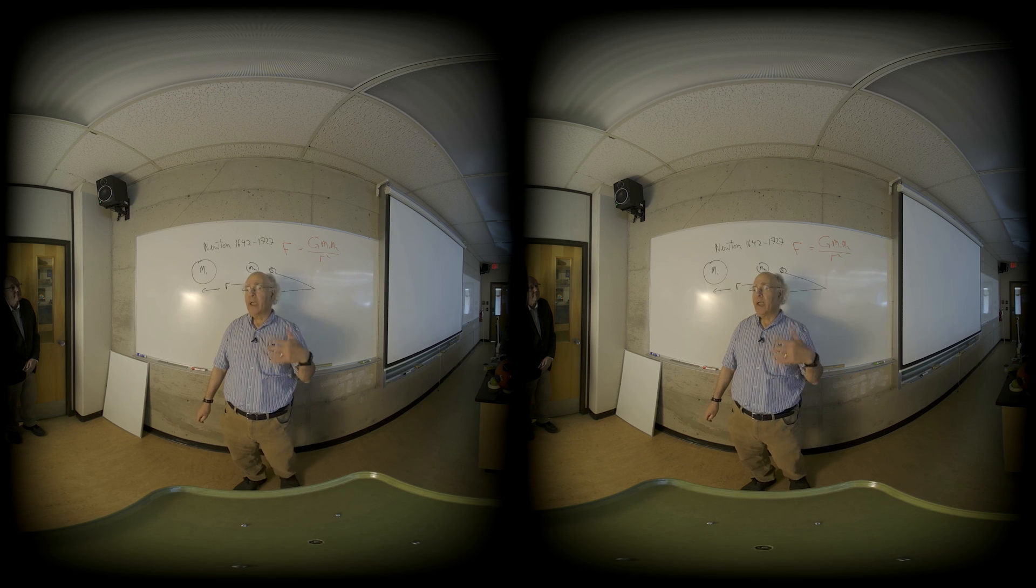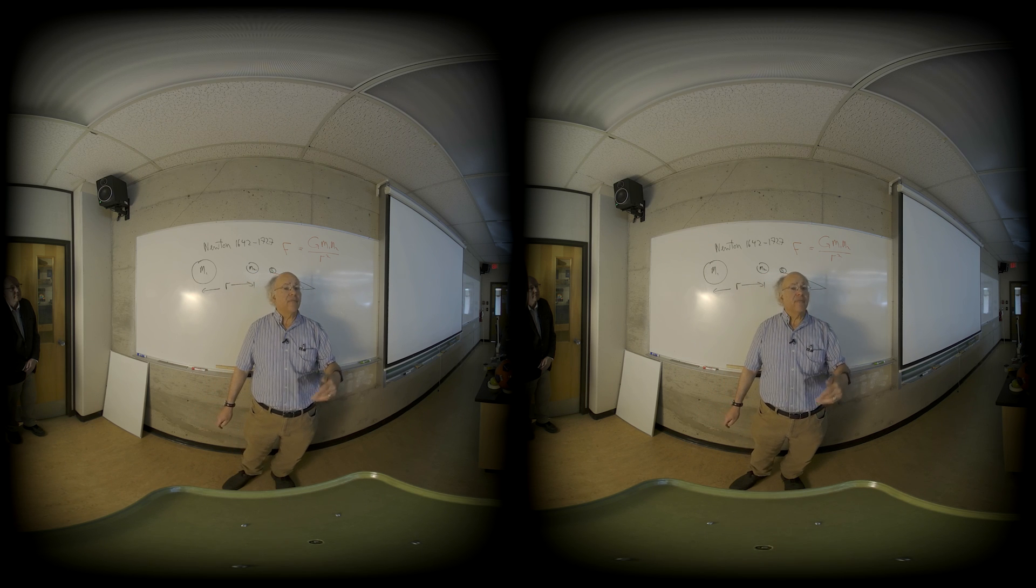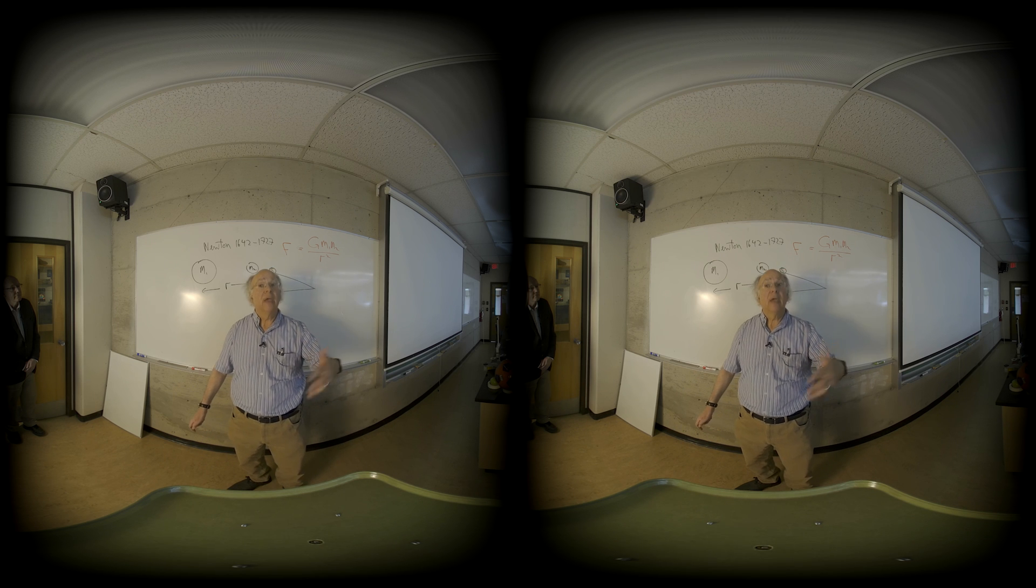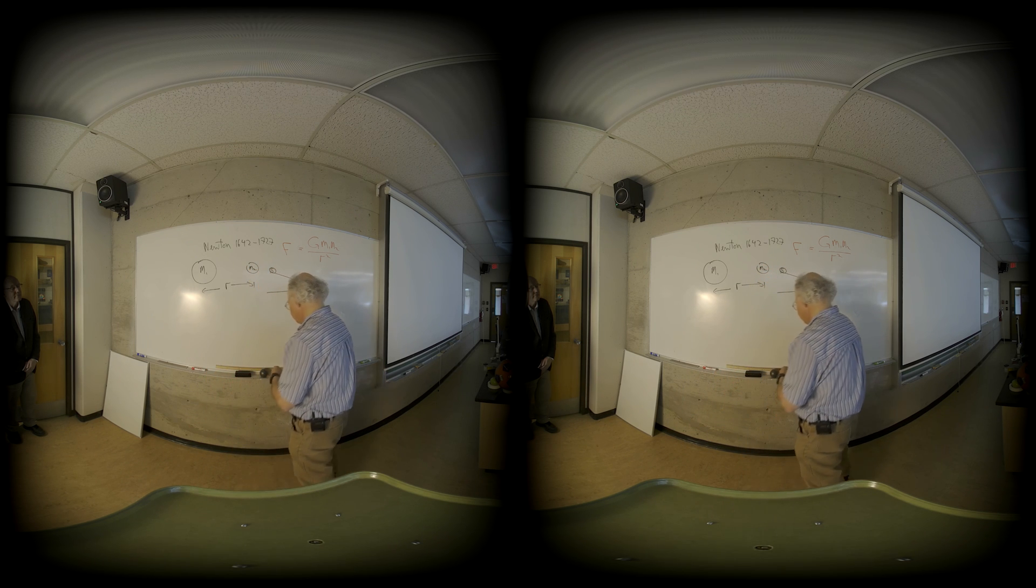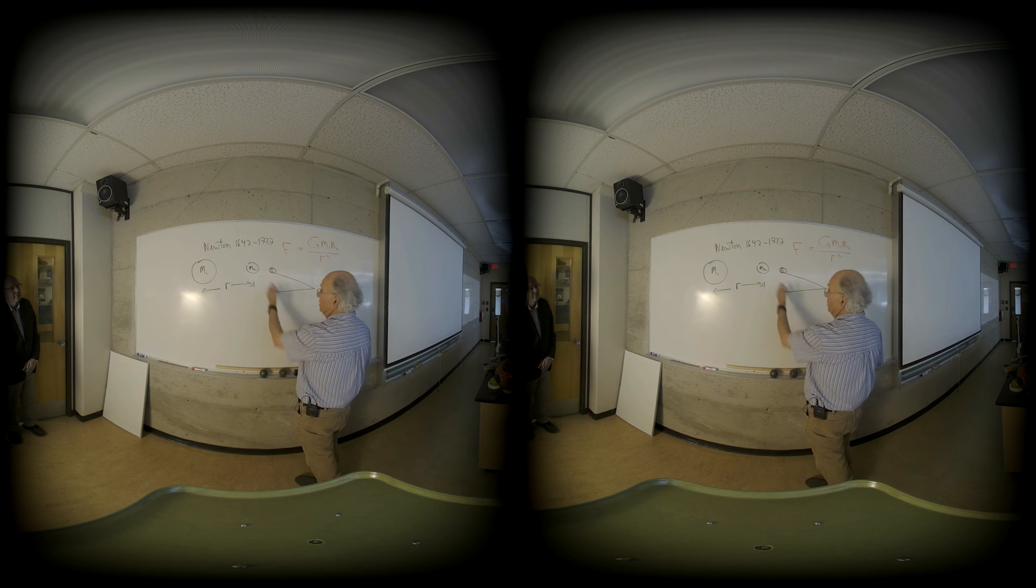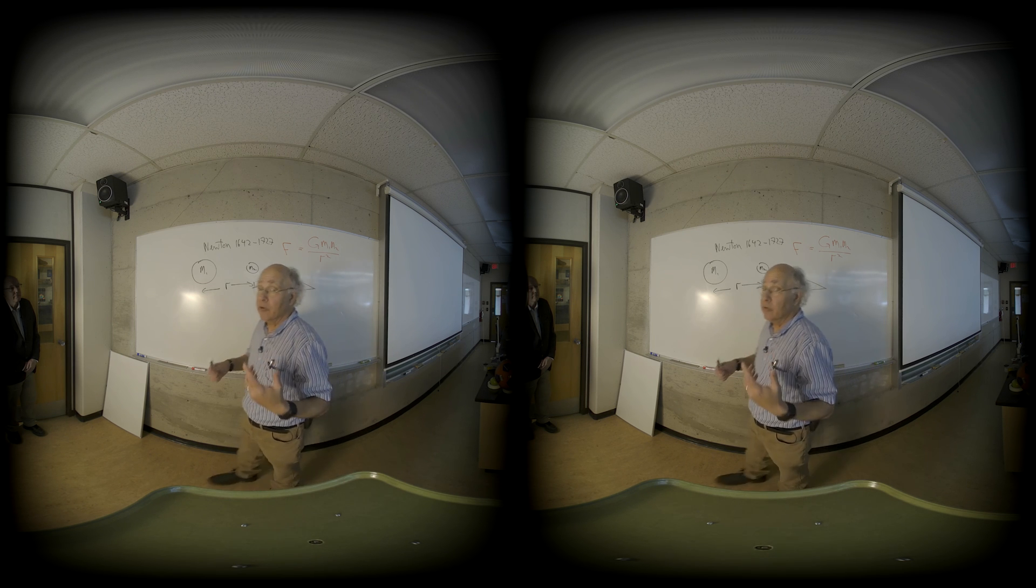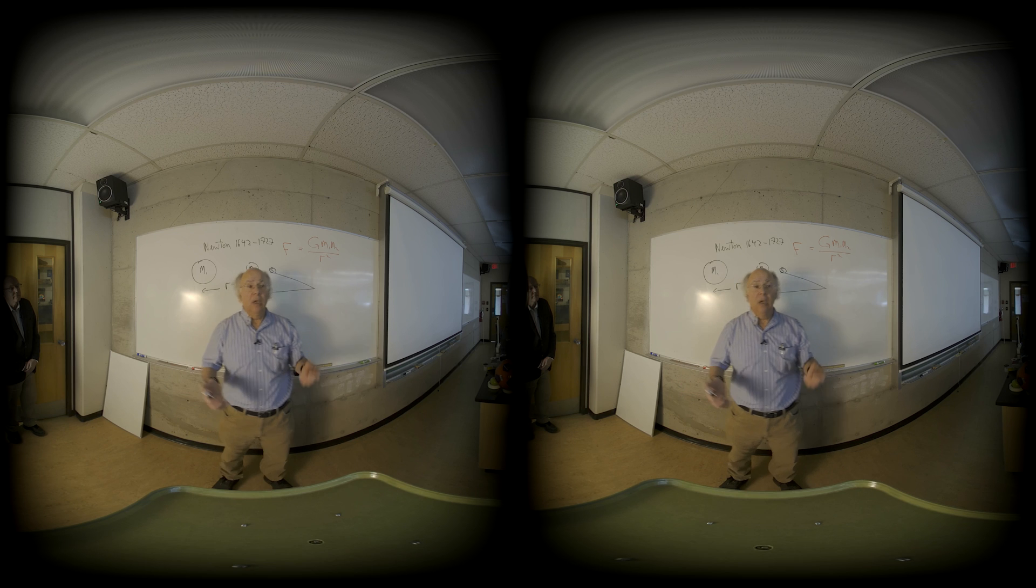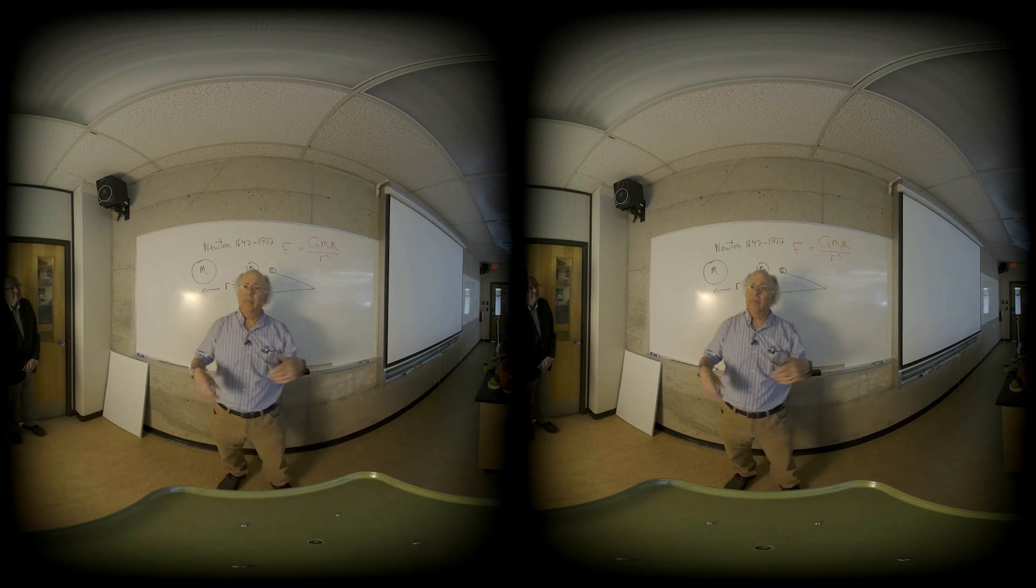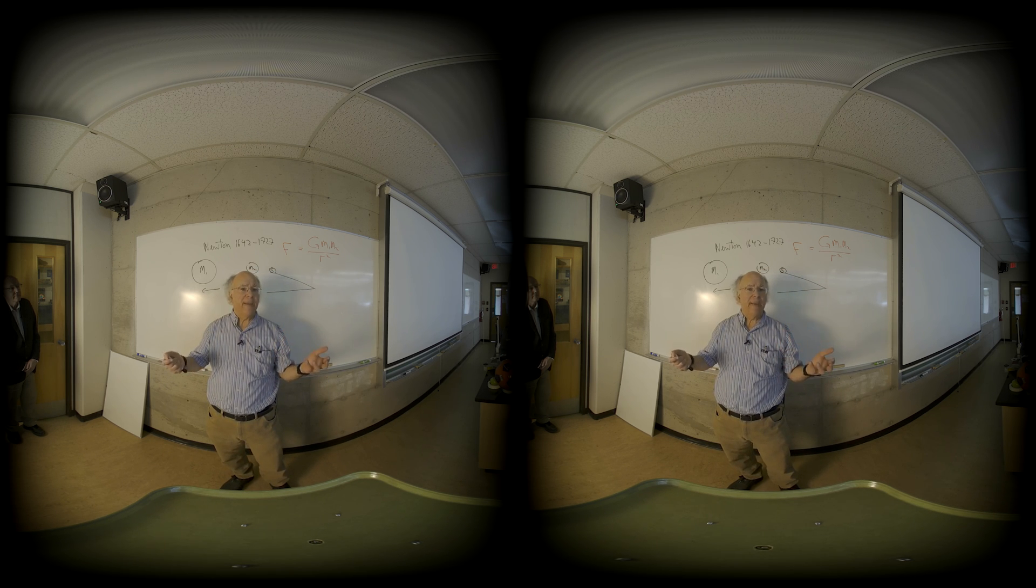What Galileo found was that bodies gained equal amounts of speed every second. So if after one second it's going at three meters per second, after two seconds it'll be going at six meters a second, after three seconds nine meters per second. It's gaining three meters a second every second, it's speeding up, it's accelerating. Galileo also had seen that bodies fall together independent of their mass. If you have a body not affected significantly by air resistance, a light body and a heavy body, they will fall together. So the acceleration doesn't depend on the mass.